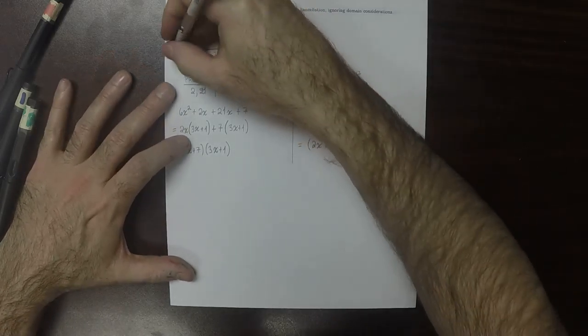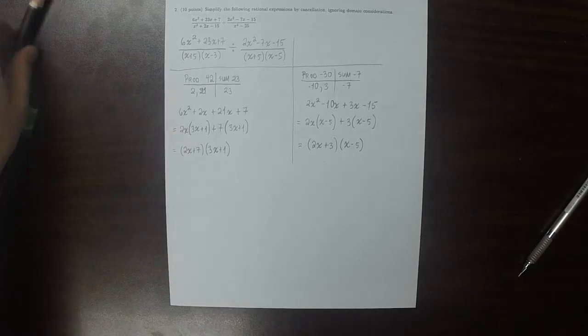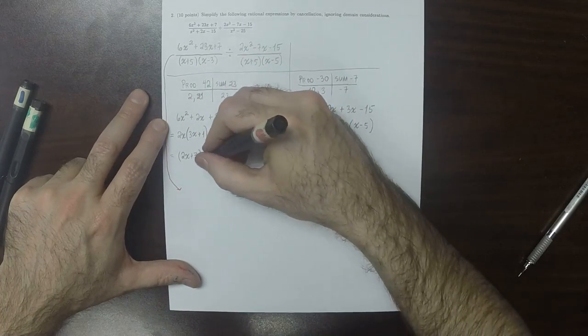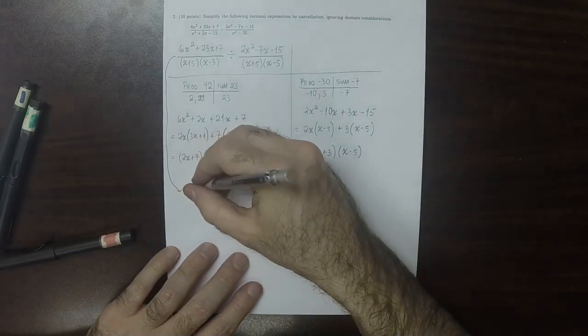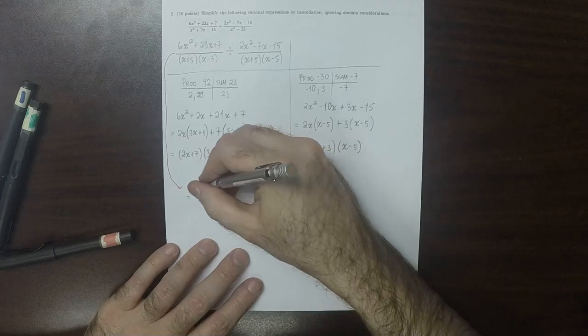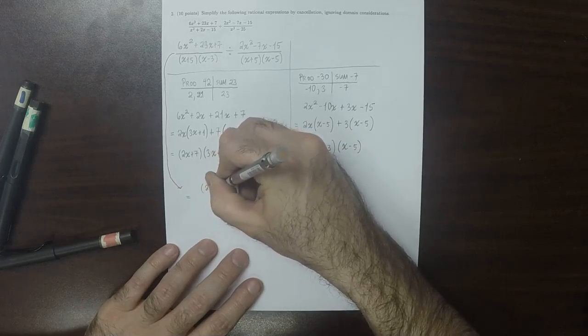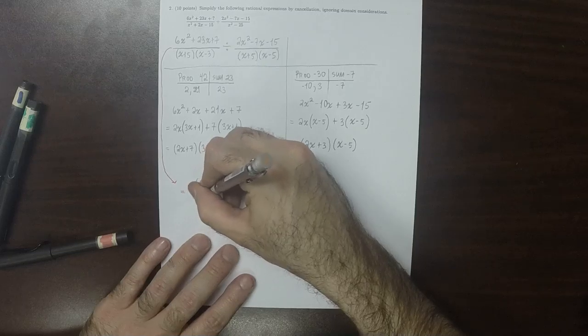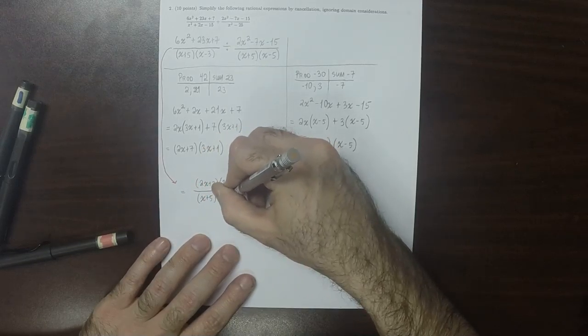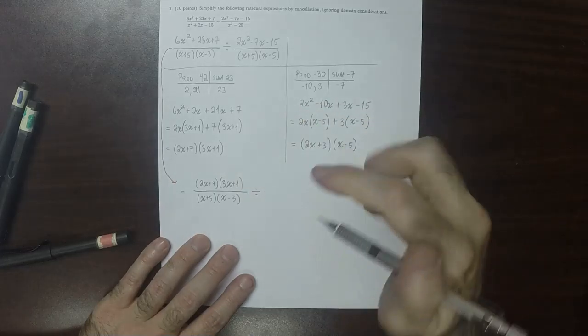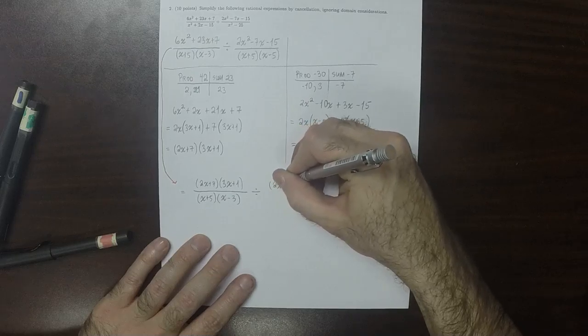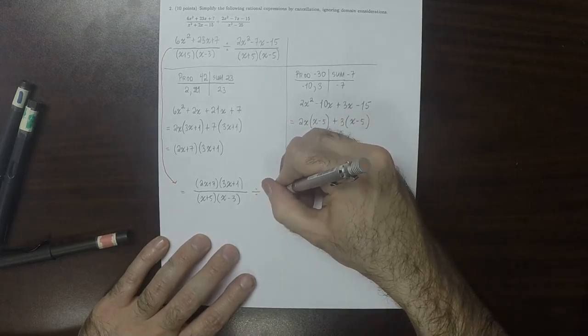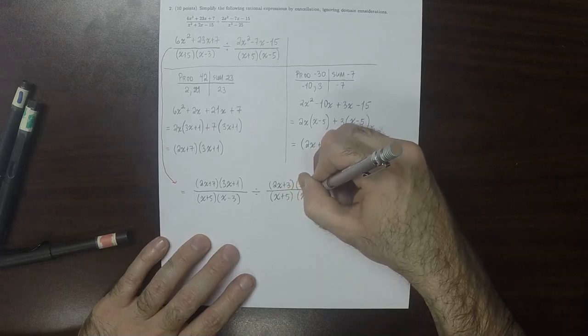So now that tells us how to continue here, combining these two. So that'll give us 2x plus 7 times 3x plus 1, divided by x plus 5 times x minus 3, and then all of that divided by 2x plus 3 times x minus 5 over x plus 5 times x minus 5.